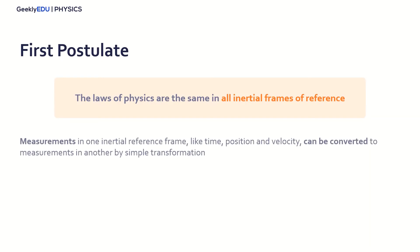Einstein's first postulate has to do with inertial frames of reference. He stated that the laws of physics are the same in all inertial frames of reference. In other words, the measurements in one inertial reference frame like time, position and velocity can be converted to measurements in another by simple transformation.